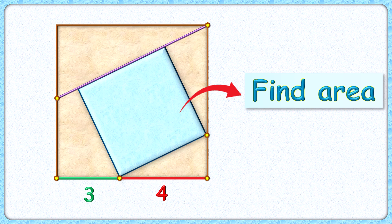This interesting question gives us two squares, the brown square and the blue square. The length of the green and red line segments is 3 and 4 centimeters. The exciting part is, with this limited data, we have to find the area of this blue square.